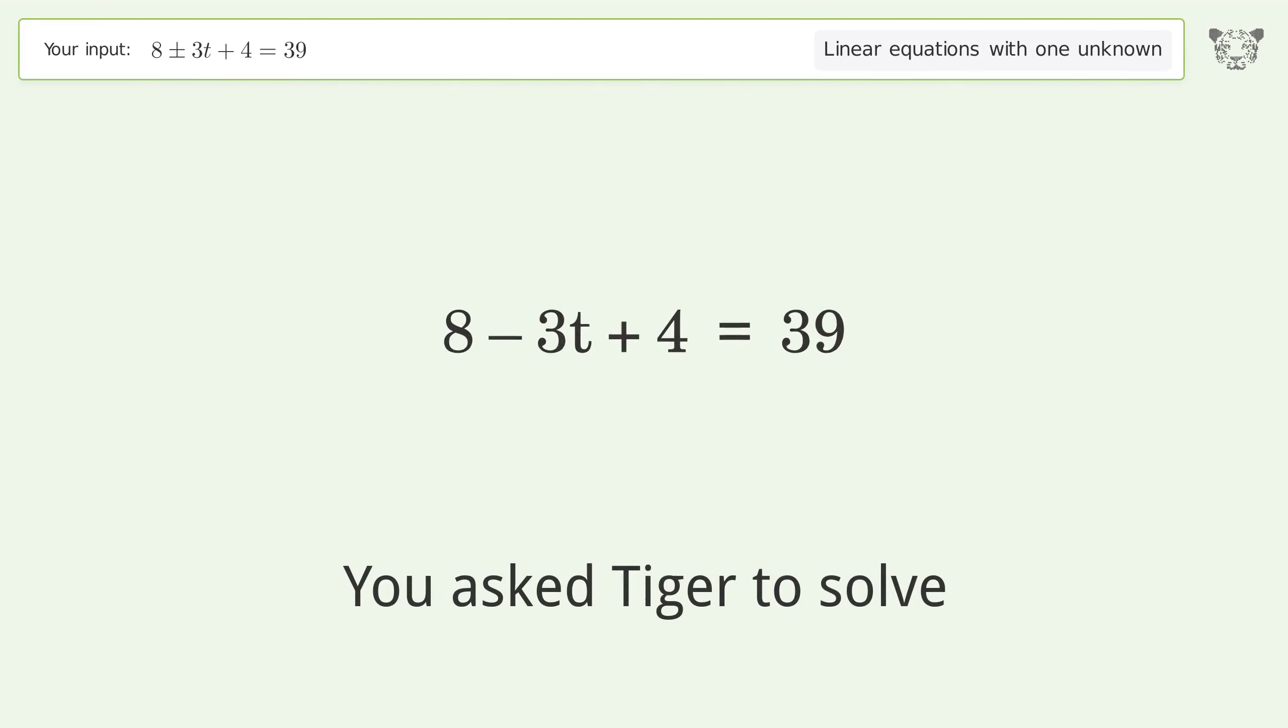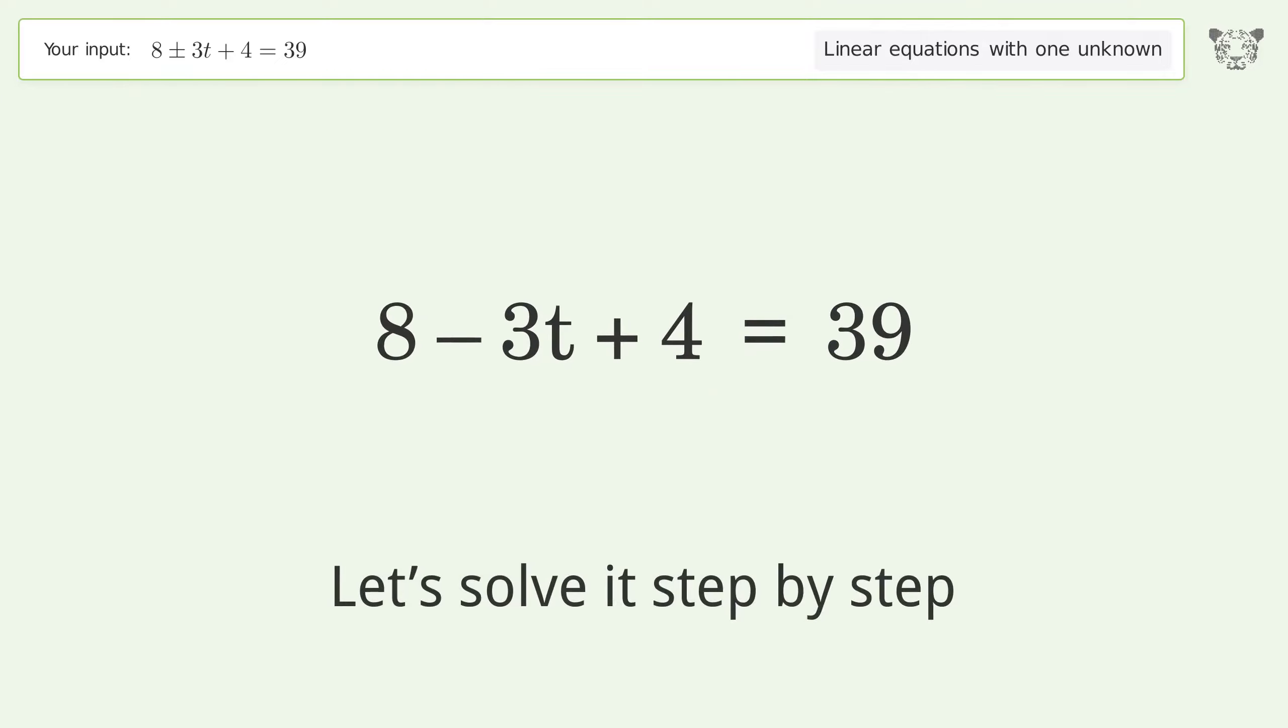You asked to solve this linear equation with one unknown. The final result is t equals negative 9. Let's solve it step by step. Simplify the expression.